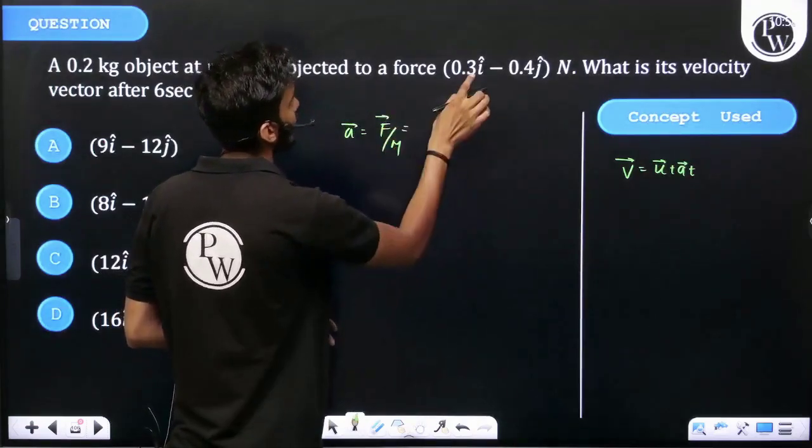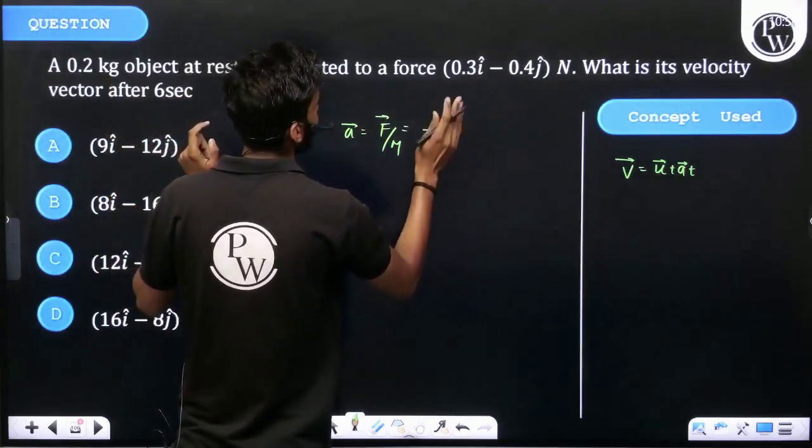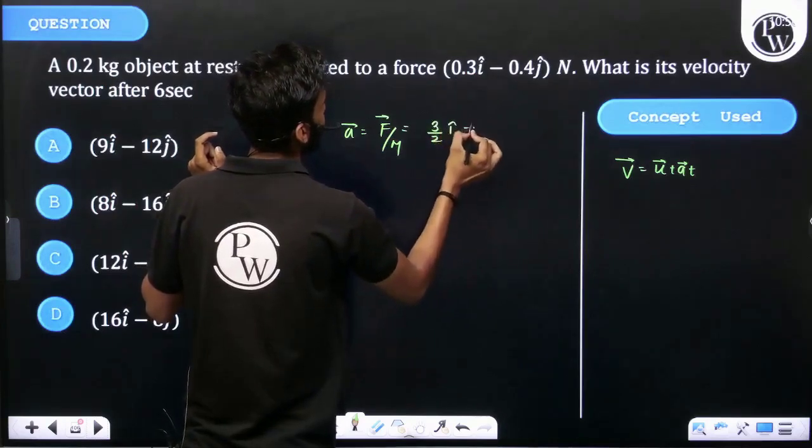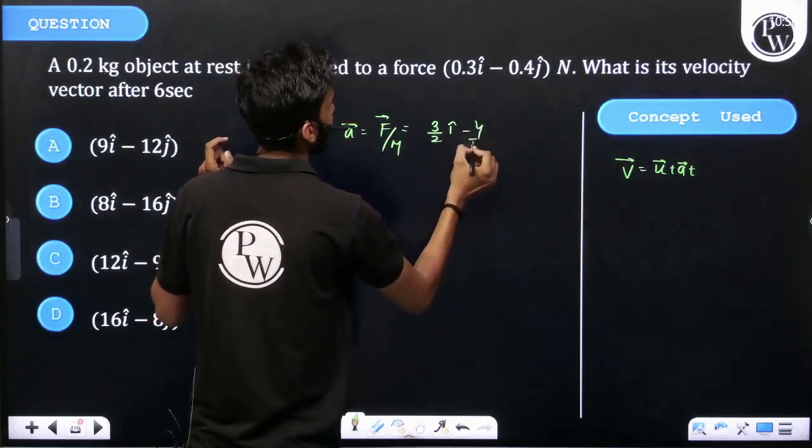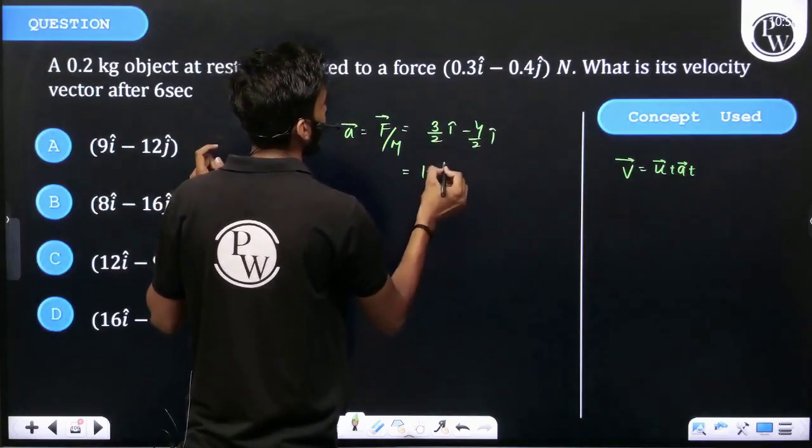And we get 0.3 divided by 0.2. Then 1 upon 2, 3 by 2 I cap, sorry minus 4 by 2 J cap. That means 1.5 I cap.